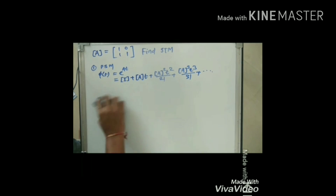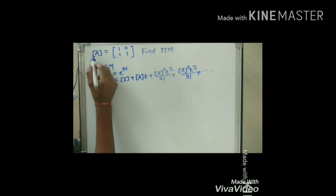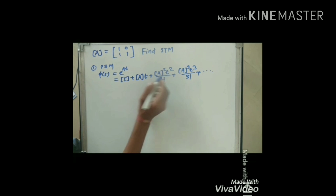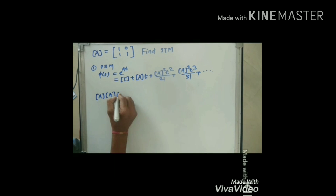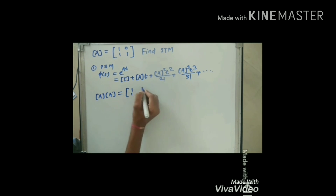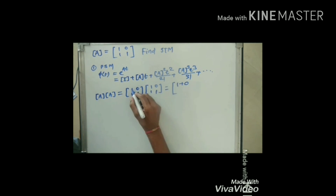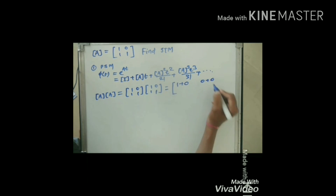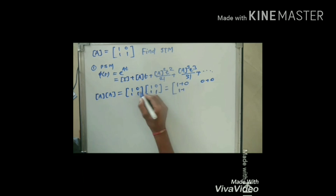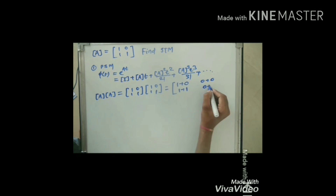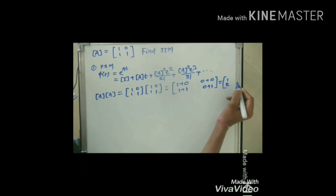To find this state transition matrix, we require A-squared and A-cubed. The system matrix A is given, so I will find A-squared first. A-squared equals A multiplied by A, which is [[1,1],[0,1]] multiplied by [[1,1],[0,1]]. Computing this gives A-squared equal to [[1,2],[0,1]].